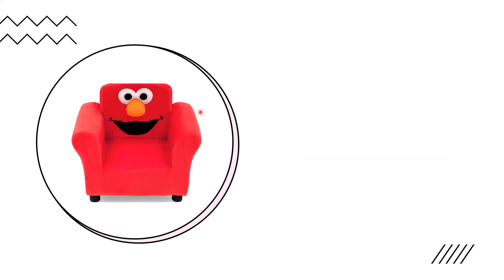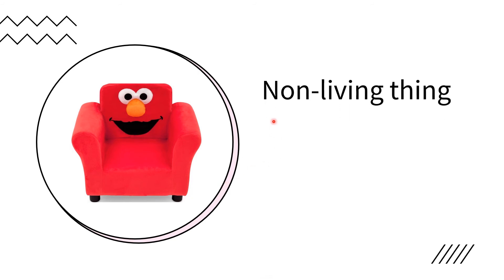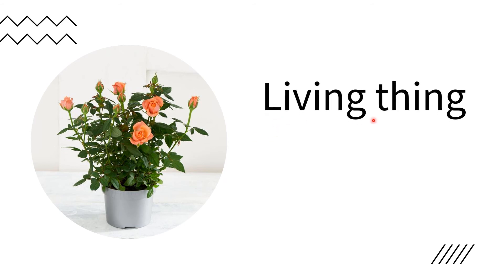Next: chair. Living thing or non-living thing? Very good — non-living thing, because the chair does not have life. Next: rose plant. Is it a living thing or a non-living thing? Very good — living thing, because it grows, it reproduces, it breathes air, and has life.